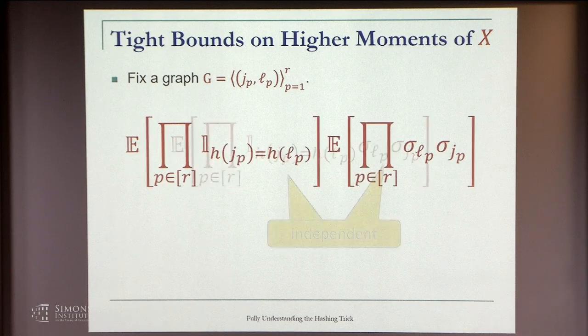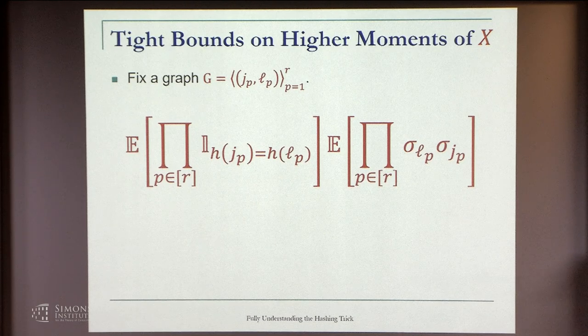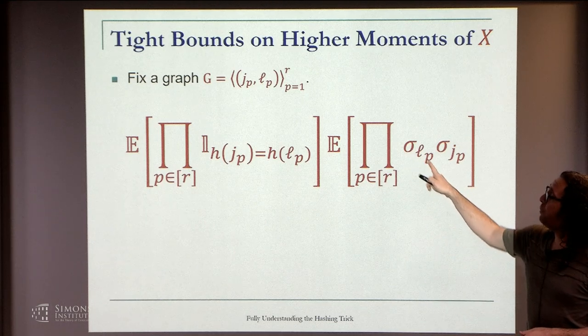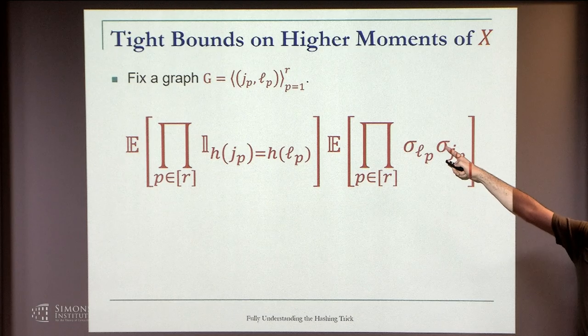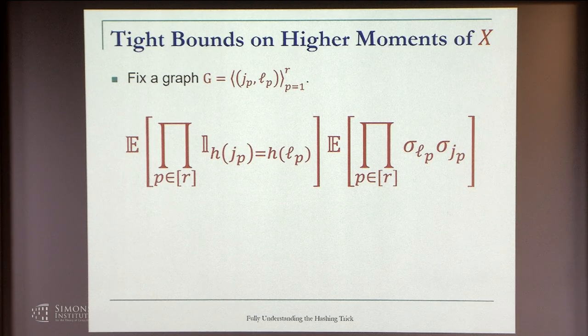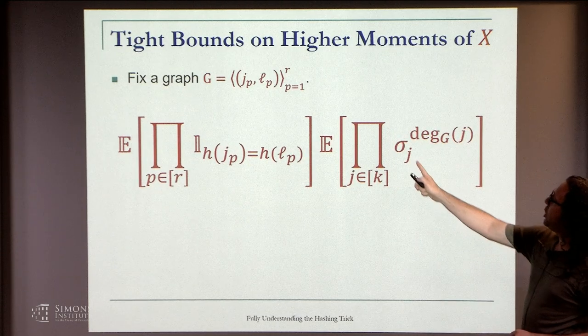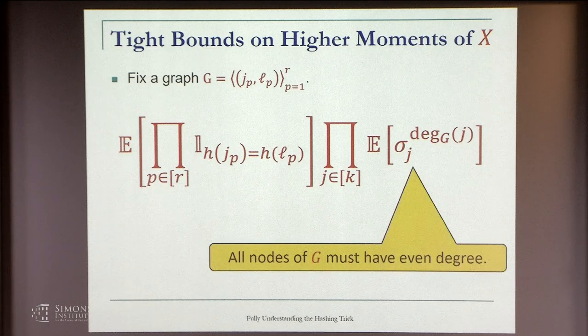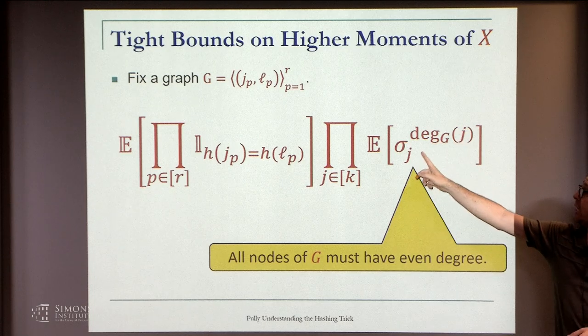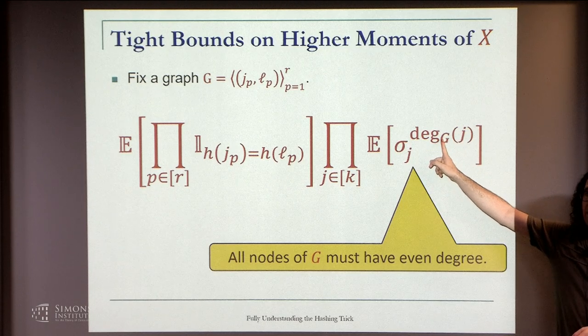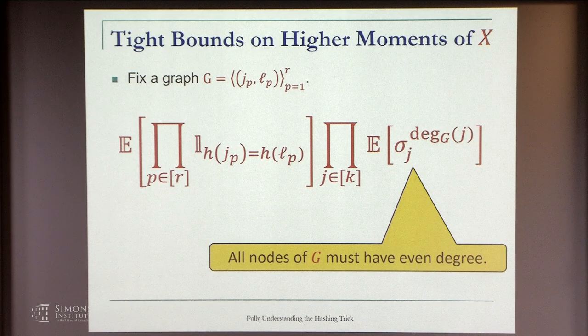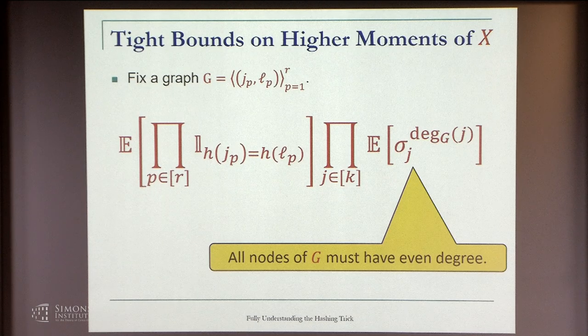Note that this variable and these are independent, so we can split the expectation. For every j, sigma_j appears how many times? It's exactly the degree of the node j in the graph. All these sigma_j's are independent. What happens if the degree is odd? Zero. The expectation is zero. If the degree is even, it's identically one. This is a degenerate variable. All nodes must have even degree in order for the summand to be non-zero.